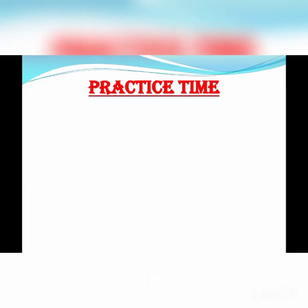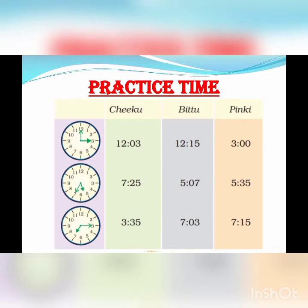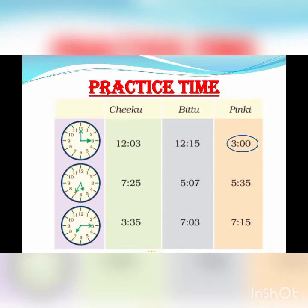Let's proceed further. Practice time. Kindly refer to page number 36 of your textbook for this practice time. You have to do this practice time in your textbook. Here, we have to identify the correct time. For the first question, the hour hand — that means the shorter hand — is on 3 and the minute hand is on 12. So we can say 3 hours 00 minutes, because if the minute hand is on 12, we count it as 00 minutes. So the correct answer is 3 hours 00 minutes.